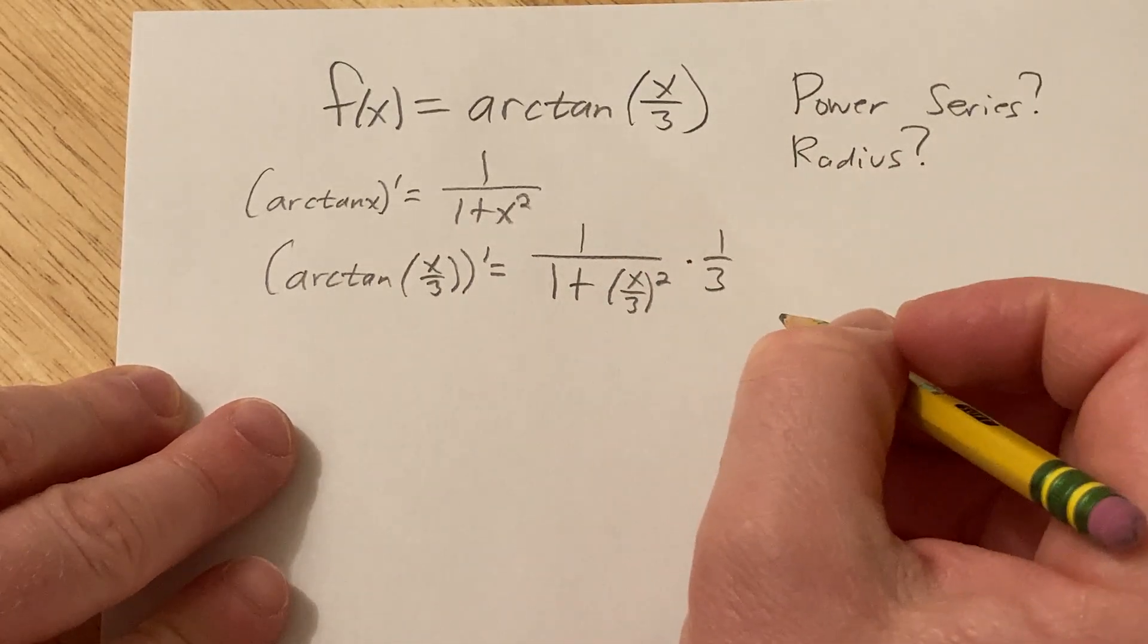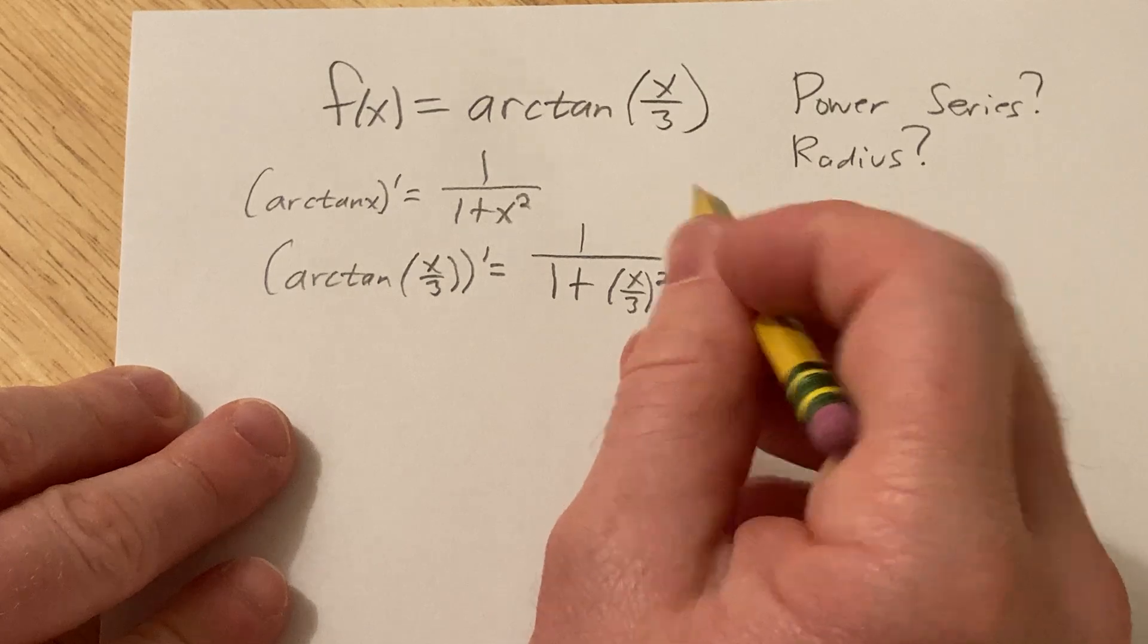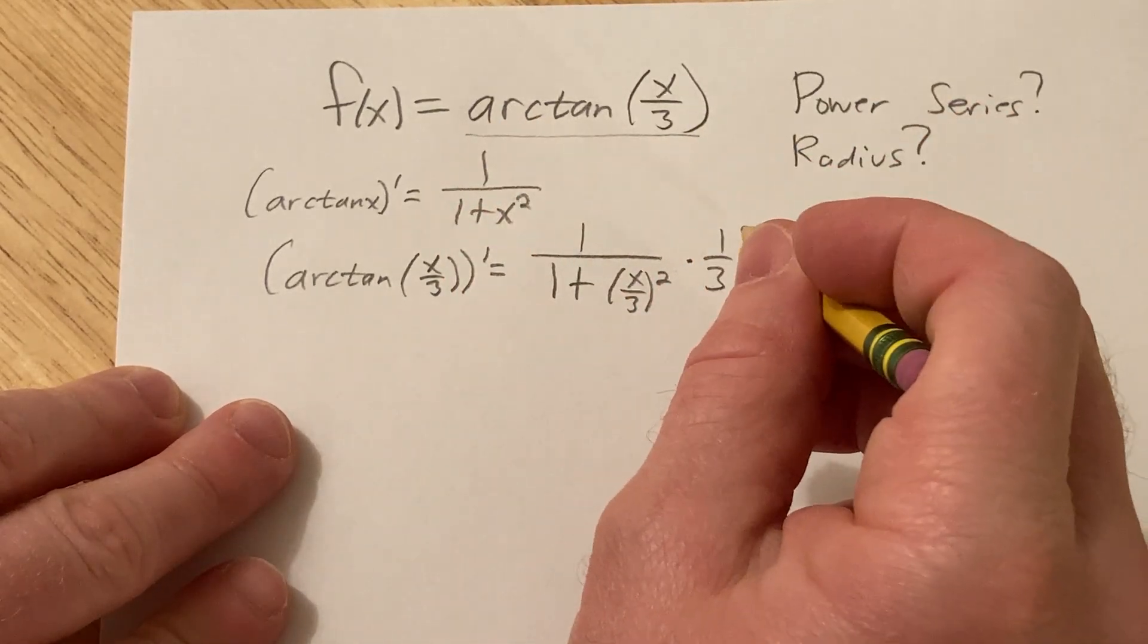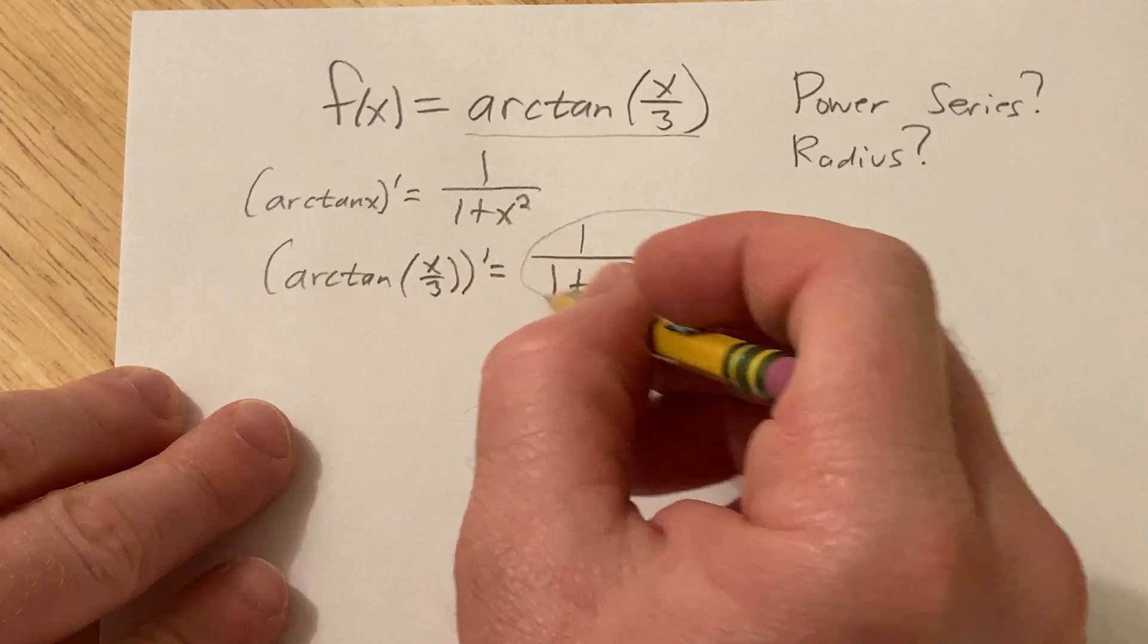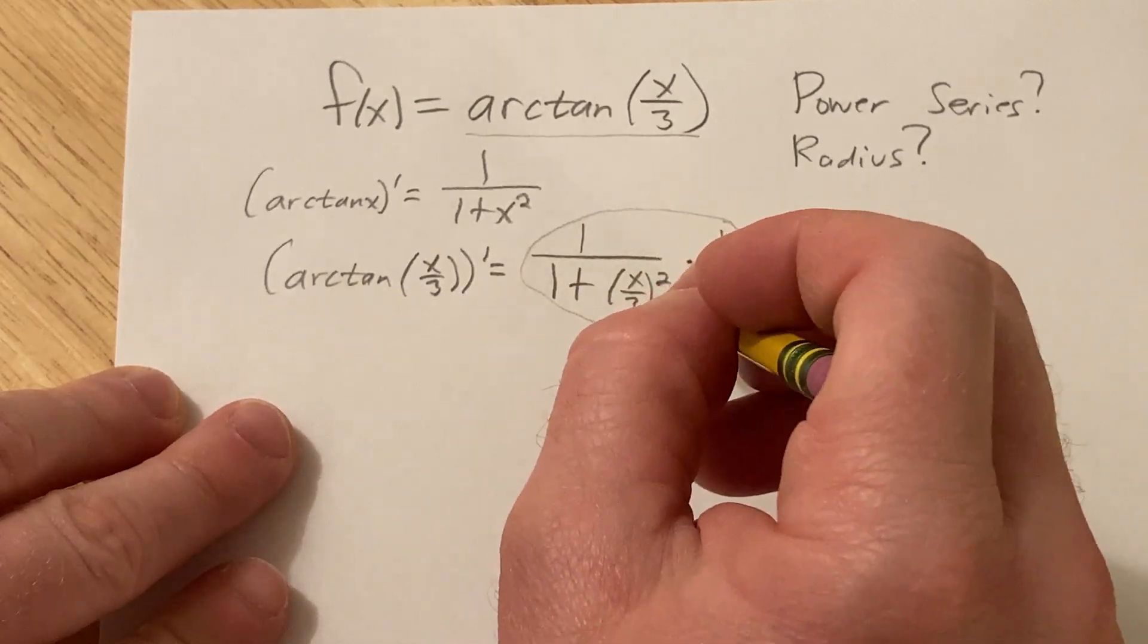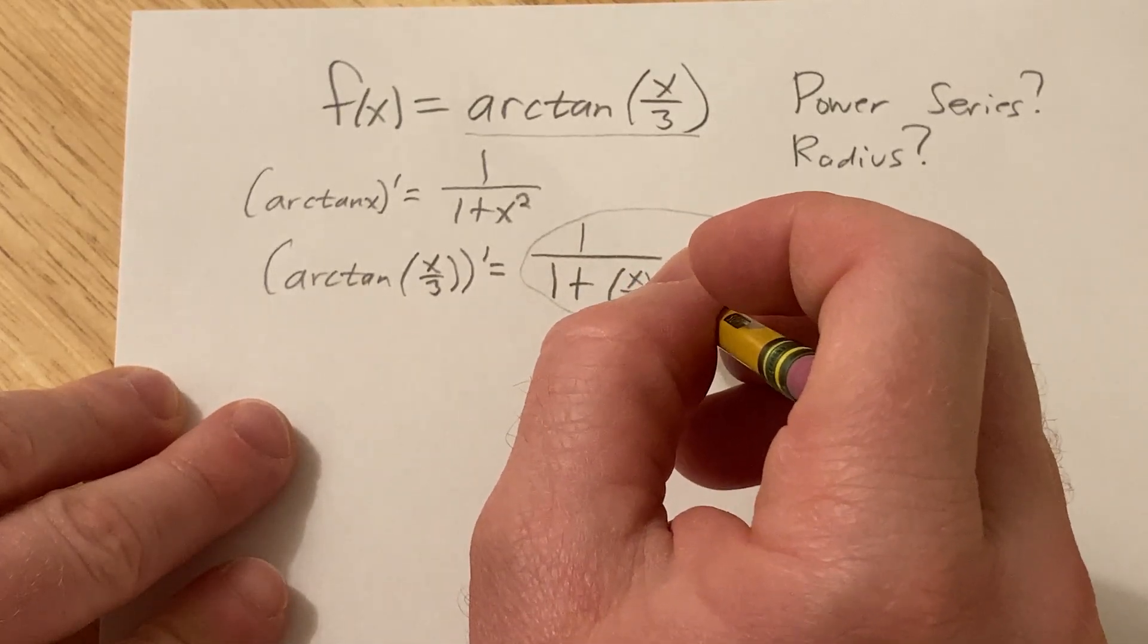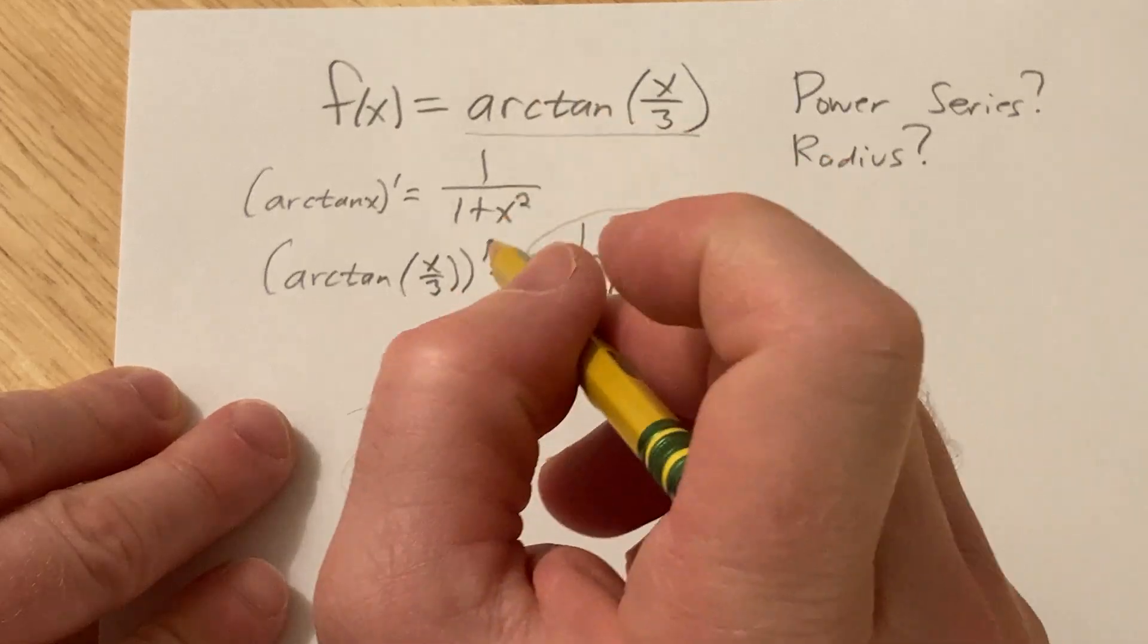So what we're going to try to do in this problem in order to come up with a power series for this is we're first going to come up with a power series for this, and then we're going to integrate it because if you integrate this, you should get back the arctangent. That's the trick.